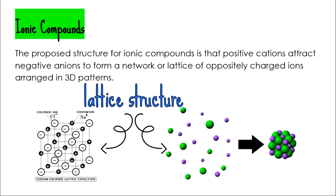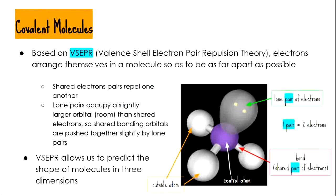For covalent molecules, it's a little different — there is no one structure for all covalent molecules. The shapes come from a theory called valence shell electron pair repulsion theory, otherwise known as VSEPR. This theory states that electrons arrange themselves in a molecule so they are as far apart as possible. Because electrons are negatively charged, two electrons will repel each other, so each electron will have as much space as it can get.